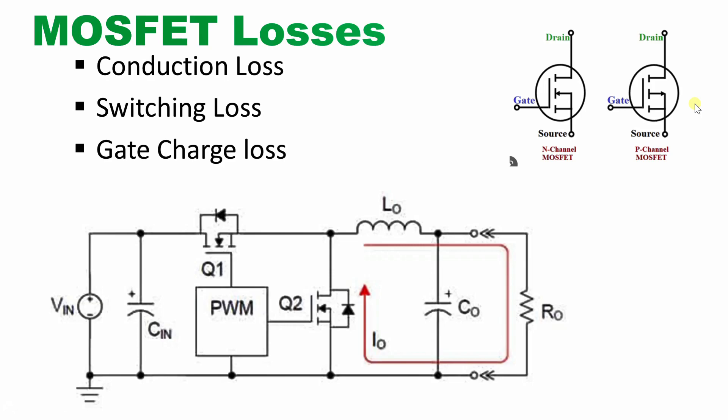Conduction losses happen when the MOSFET is in continuous conduction mode — that means when current continuously flows from drain to source. Switching losses happen when switching from on to off or off to on; during that transition process, loss will occur.